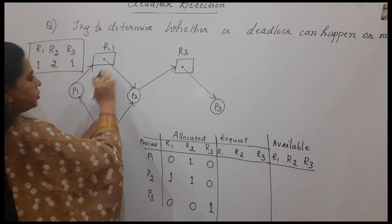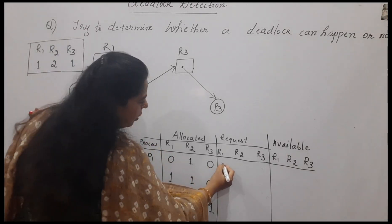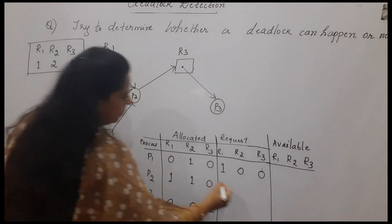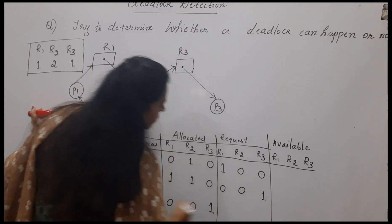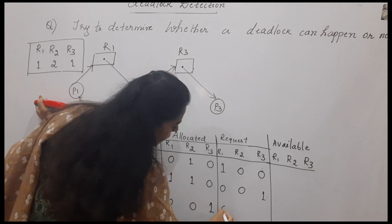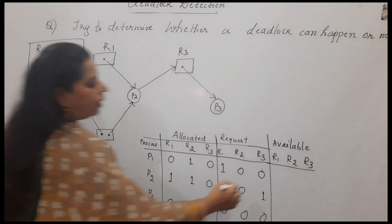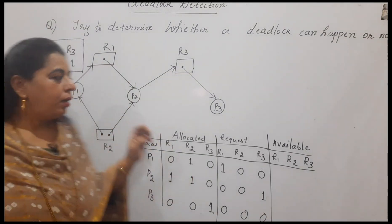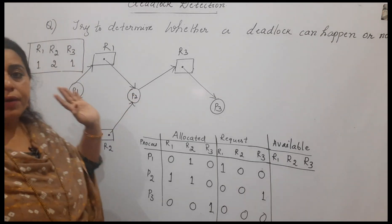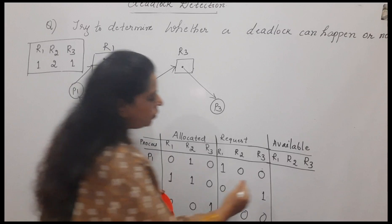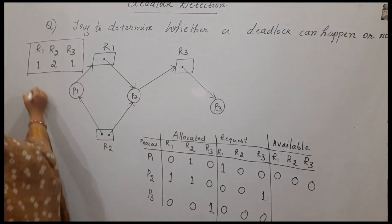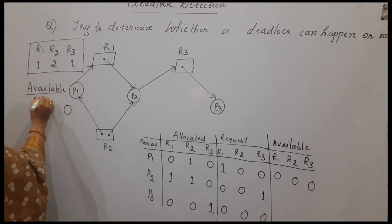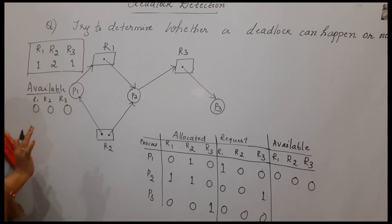Next, what are the requests each process is making? P1 is making a request for R1, so we write 1; P1 is not requesting R2 or R3. P2 is making a request for R3, not making any request for R1 and R2. P3 is not making a request for any of the resources, so it is 0, 0, 0. Now, what about available? Available is 0, 0, 0 for each of the resources.